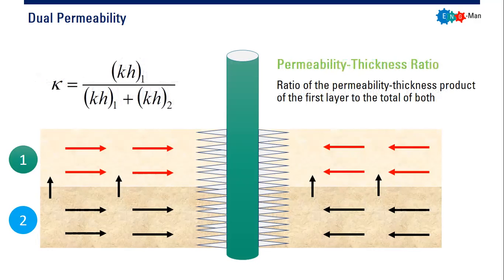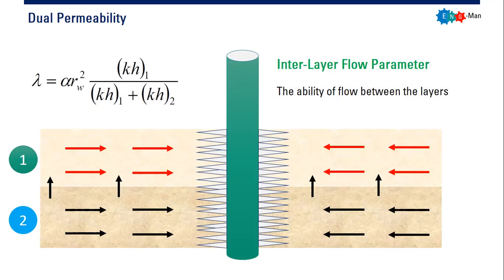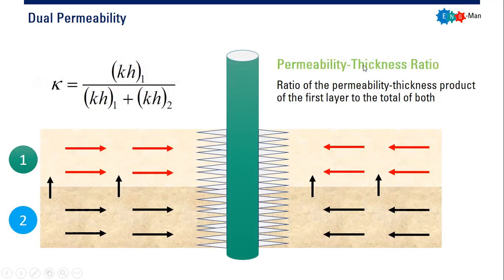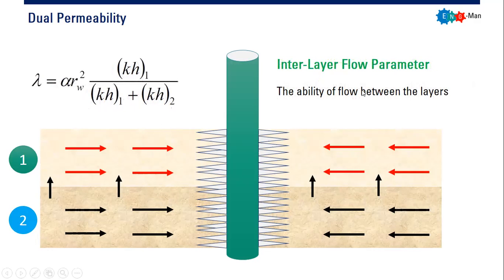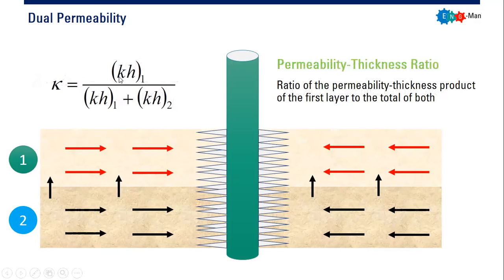The third parameter is kappa, the permeability-thickness ratio. This is the ratio of the permeability-thickness product of the first layer to the total permeability-thickness product of both layers combined. It is similar to the interlayer flow parameter lambda, but without the wellbore radius term.